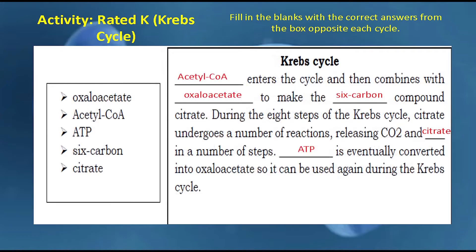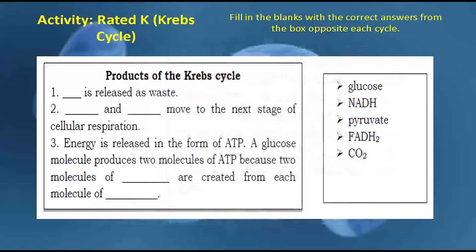Acetyl-CoA enters the cycle and combines with oxaloacetate to make the six-carbon compound citrate. During the eight steps of the Krebs cycle, citrate undergoes a number of reactions releasing carbon dioxide. ATP is eventually converted back into oxaloacetate so it can be used again during the Krebs cycle.